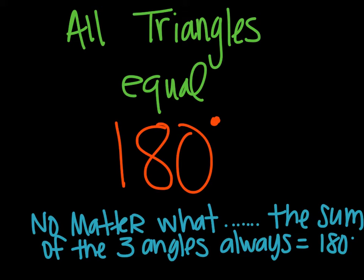To review, we just need to know that all triangles, no matter what they look like or what size they are, the sum of all the angles will always be 180 degrees. The three angles together when you add them up will always be 180 degrees.